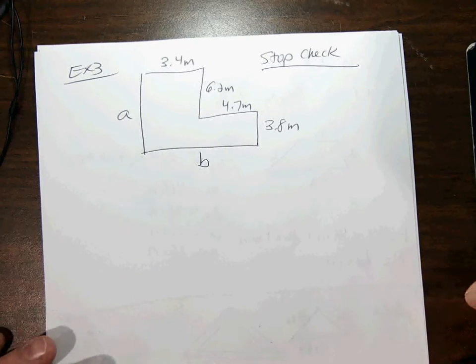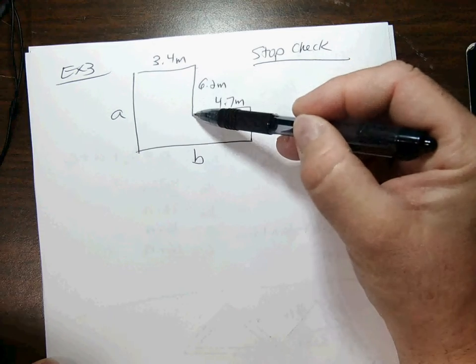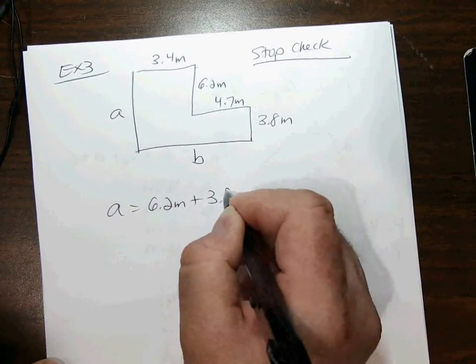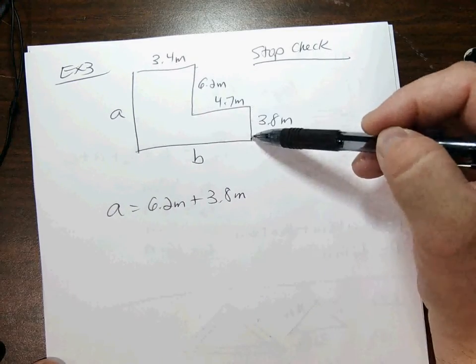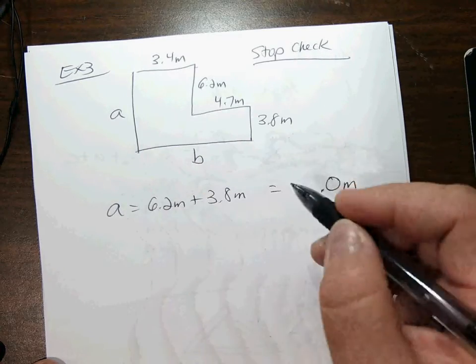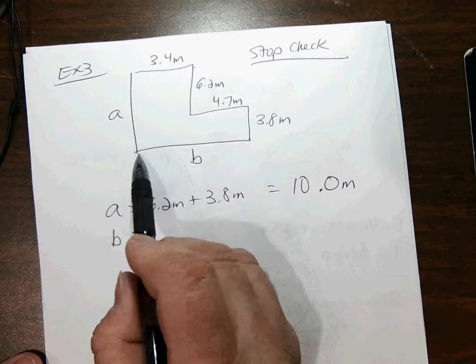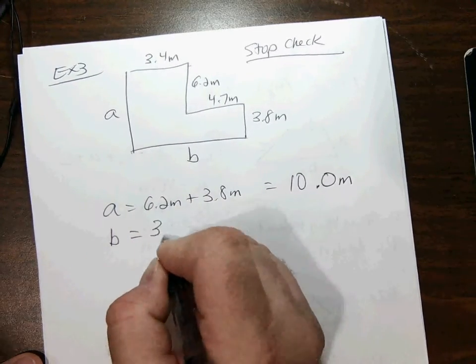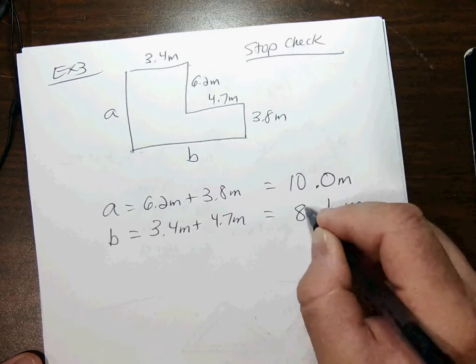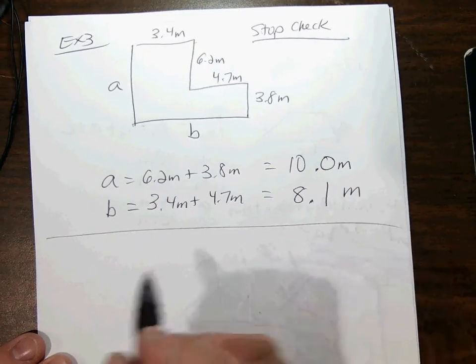I'm looking at the margin on page 720, the stop and check. Find the missing dimensions A and B. We'll do the example next. There's kind of two ways to slice it here. We know what A and B are. This length A, that's the entire length of this long side. Well, it's the same as this little length plus that little length. So A is going to be 6.2 meters plus 3.8 meters. Can everybody see that? It's just this length plus that length is going to be the entire length A. That'll be 10.0 meters, or 10 meters. What about length B? Again, the long side is going to consist of that little short side plus that little short side. 3.4 meters plus 4.7 meters is going to be 8.1 meters. That's how we do a problem like that. We'll break it up into familiar-looking shapes.